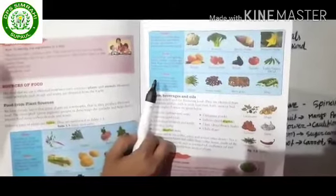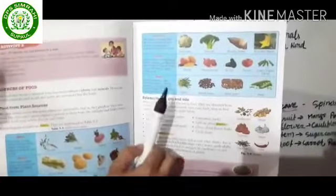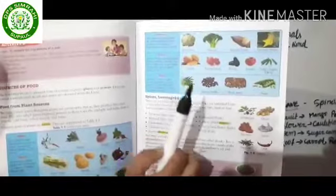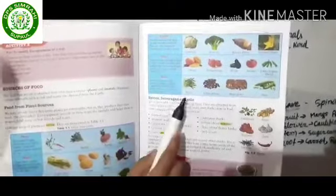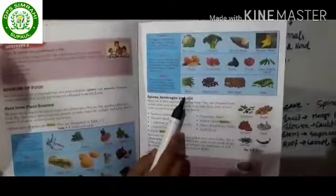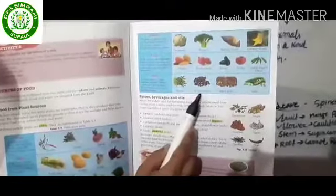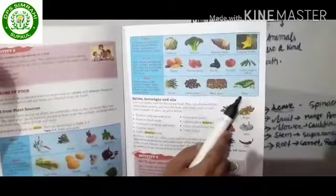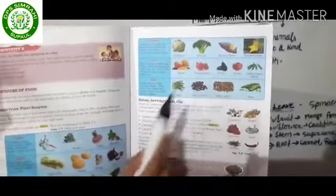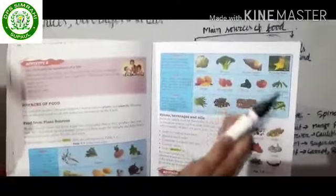The last and most important one is seeds — beans, kidney beans, black gram, and peas. These are shown in your book.